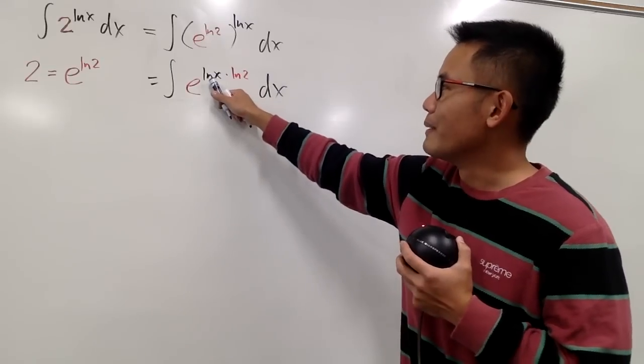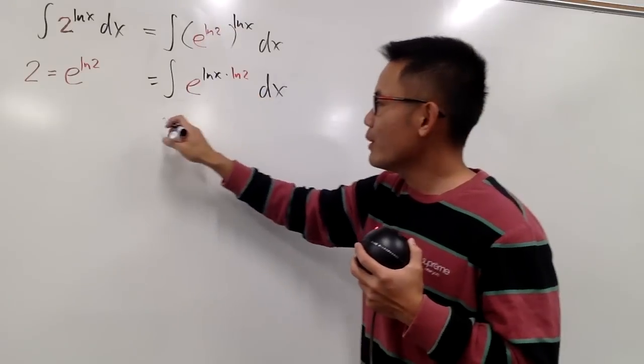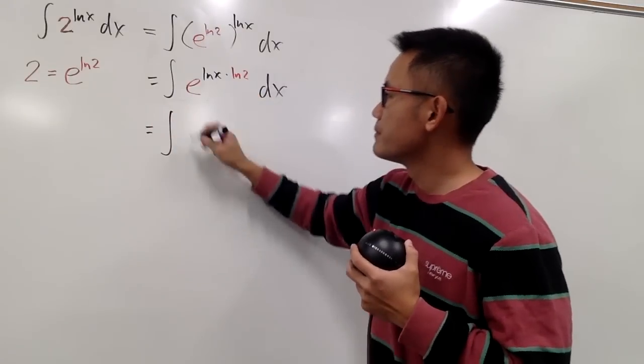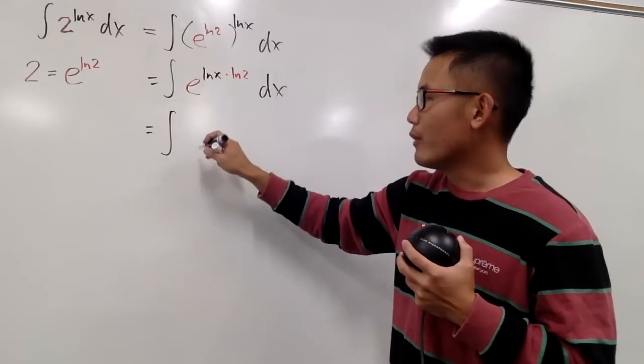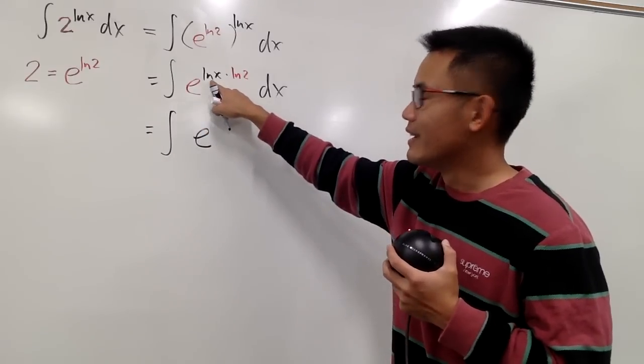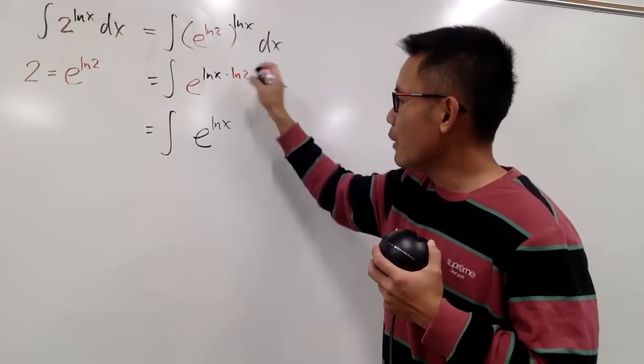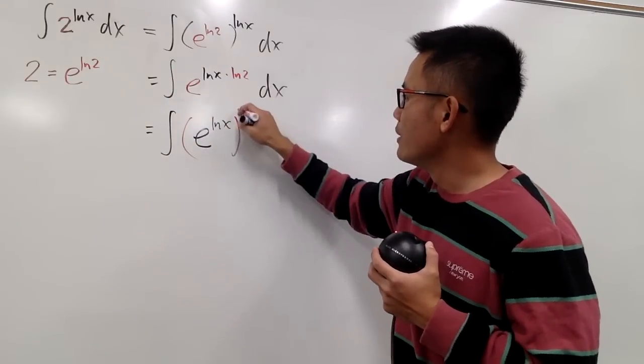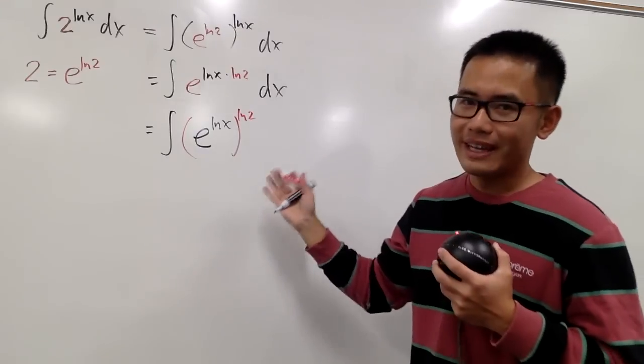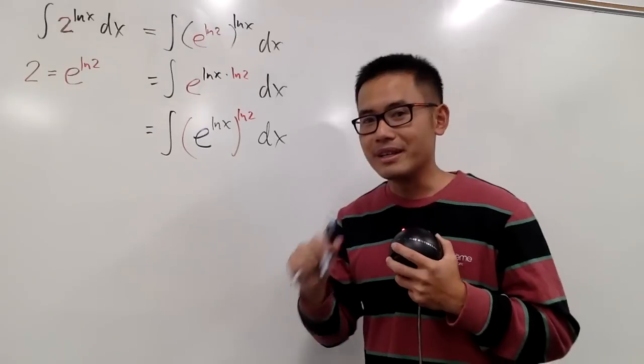And then now we have a multiplication in the powers. I can do the following. I am going to write it as the integral. And I'm going to, of course, keep the e as the base. And then this right here, I'm going to put it with the e, alright? And then I will raise that to the ln 2 power, like that. And you may be wondering, why do I want to do this? Because now,